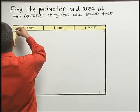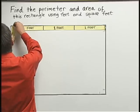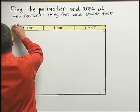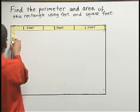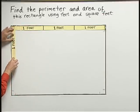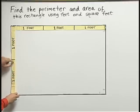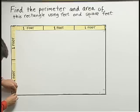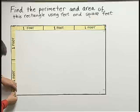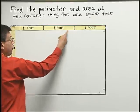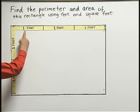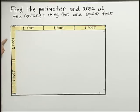Now let's measure down this side. There's another foot coming down, second foot coming down. So far, I have three feet across the top and two feet coming down the side.